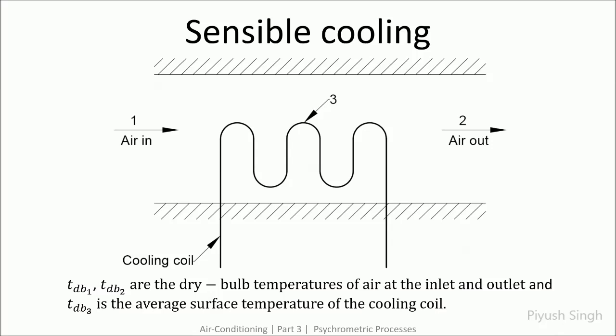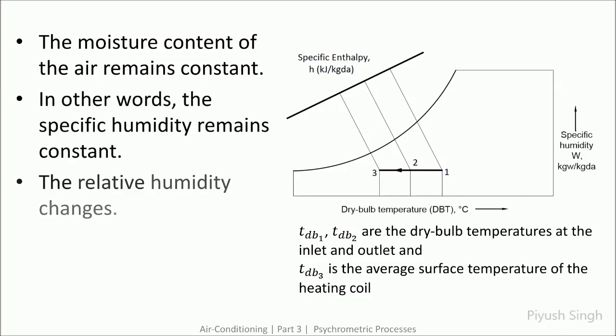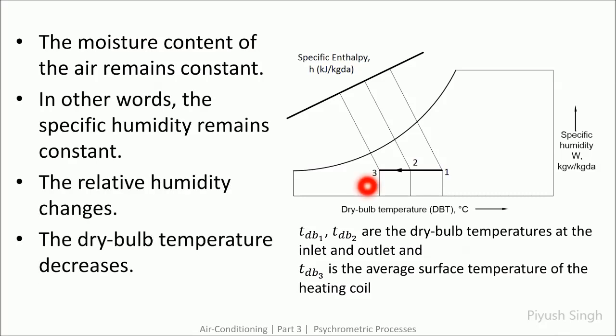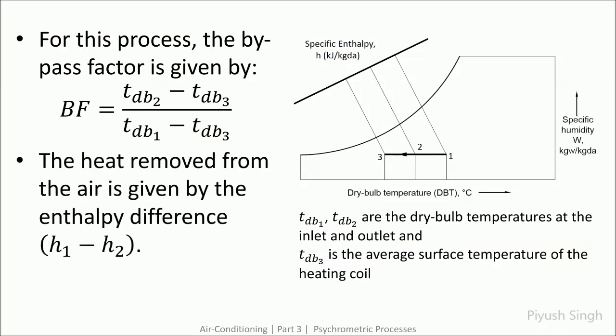Similar to sensible heating, we have the sensible cooling process, in which the coil temperature is lower than the dry bulb temperature of the incoming air but should be higher than the dew point temperature to avoid condensation. During sensible cooling, the total moisture content remains constant, so on the psychrometric chart it is represented as a horizontal line moving in the opposite direction. In this case, the relative humidity increases, the dry bulb temperature decreases, and there is a drop in specific enthalpy. Similar to the sensible heating process, this process also has a bypass factor.